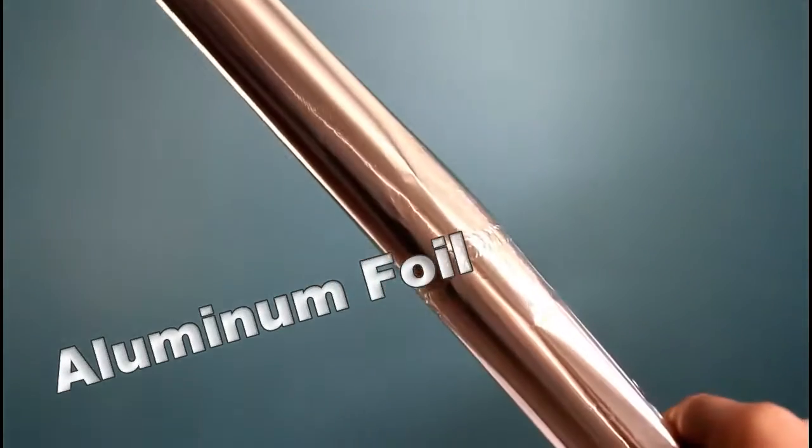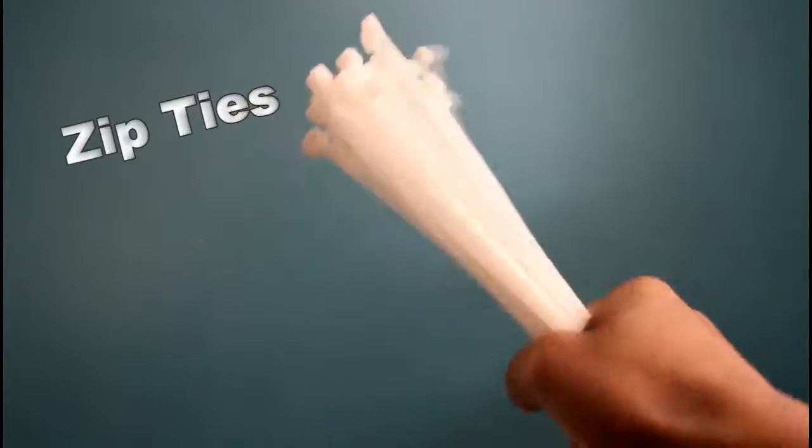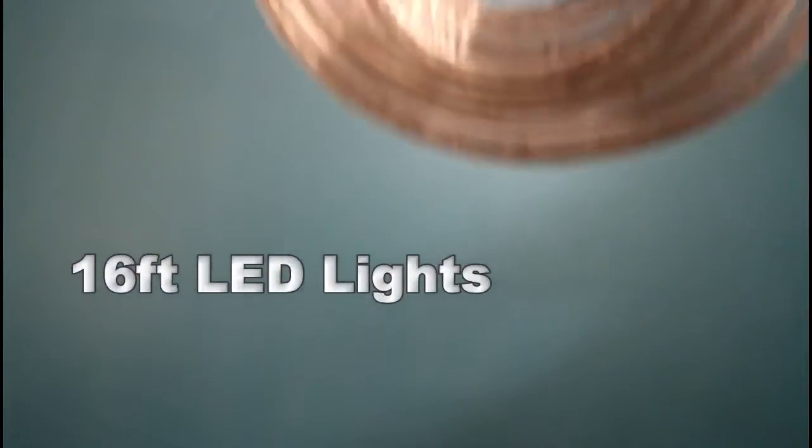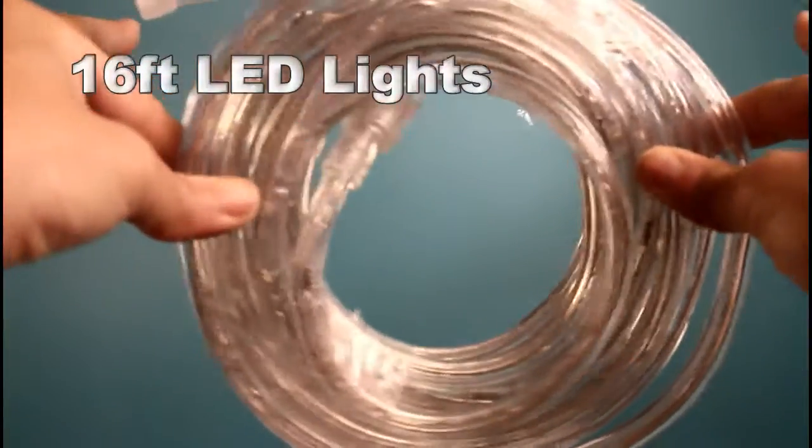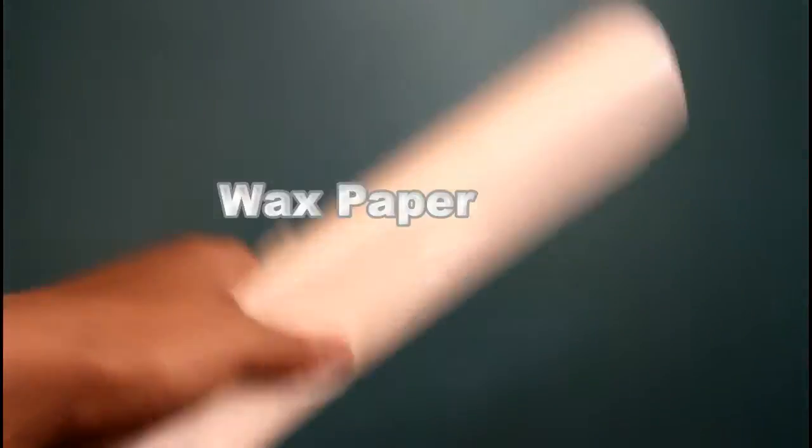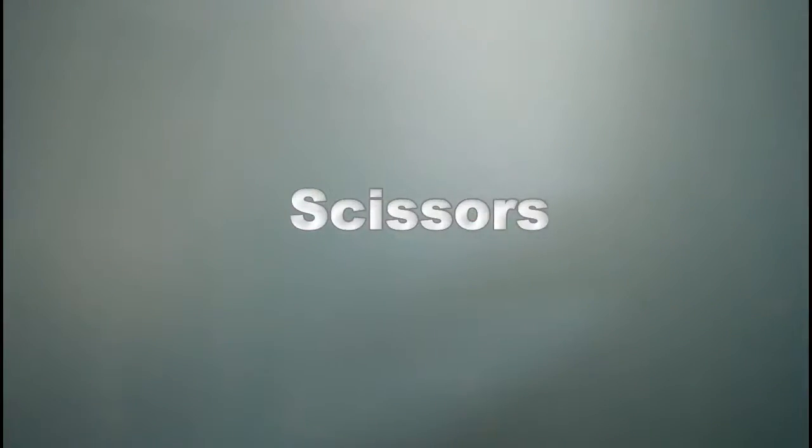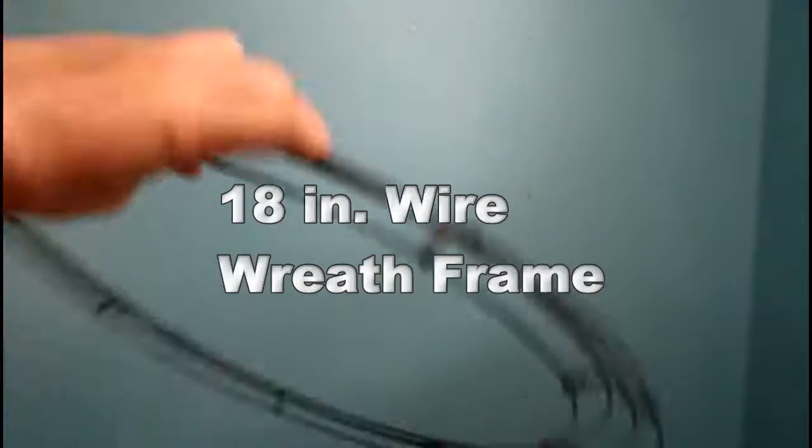But first, you are going to need aluminum foil, zip ties, 16 foot LED lights, wax paper which is optional, scissors of course you will need those definitely, 18 inch wire frame wreath, and a board. You can use cardboard, but I just had this white board laying around, so I'm using that.